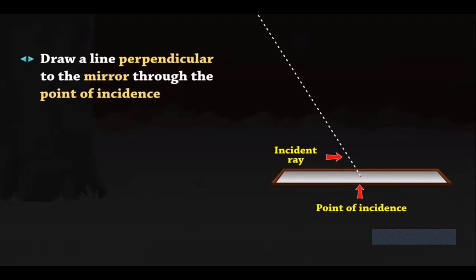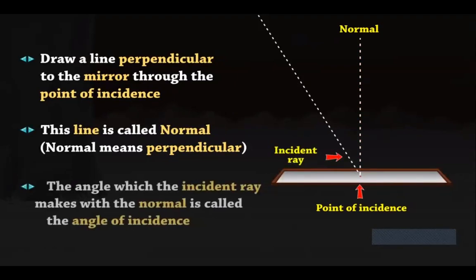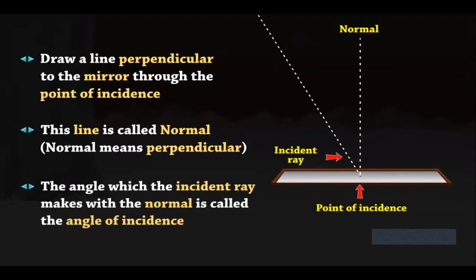Draw a line perpendicular to the mirror through the point of incidence. This line is called the normal.